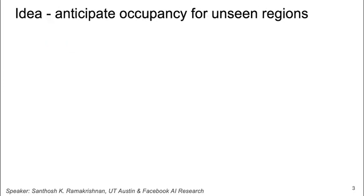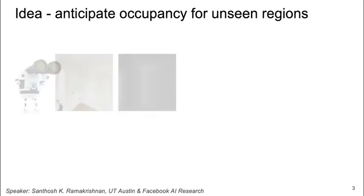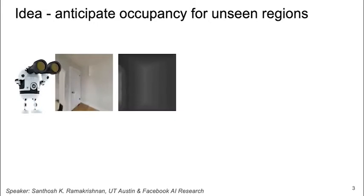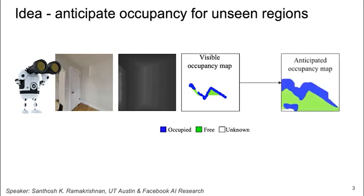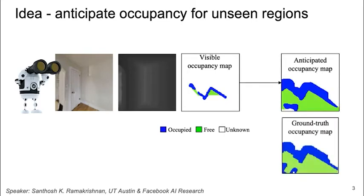Our idea is to anticipate occupancy for regions that are not immediately visible. For example, in this scene of an indoor environment, only a limited part of the environment occupancy is directly visible in the egocentric view. However, by utilizing the semantics and geometry of the scene, an intelligent agent can infer the occupancy for significantly more regions with high accuracy.